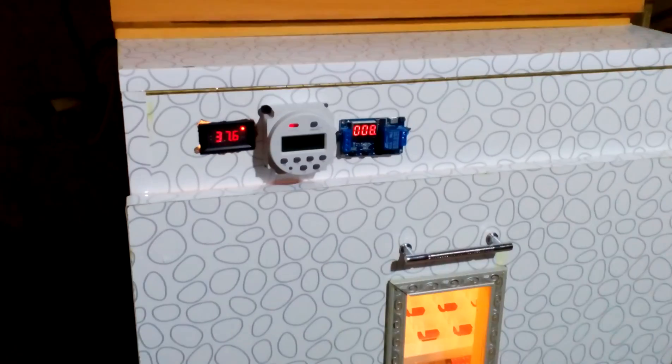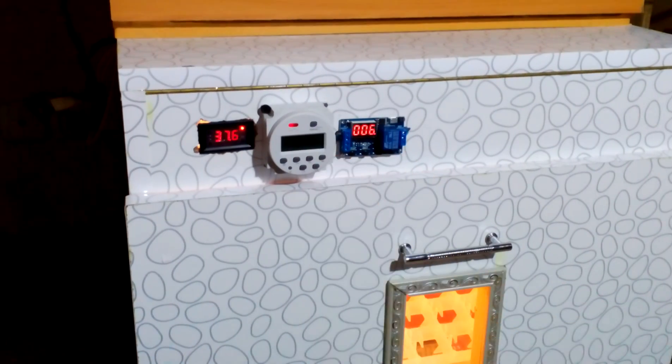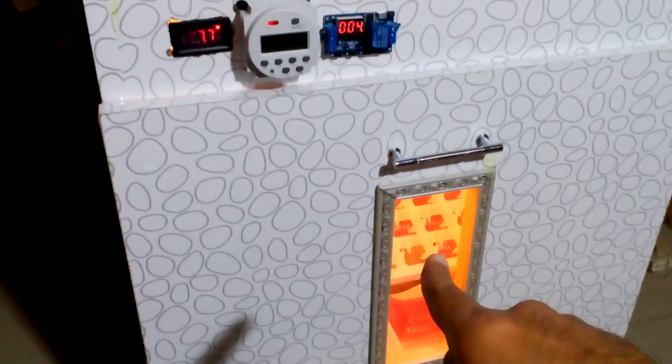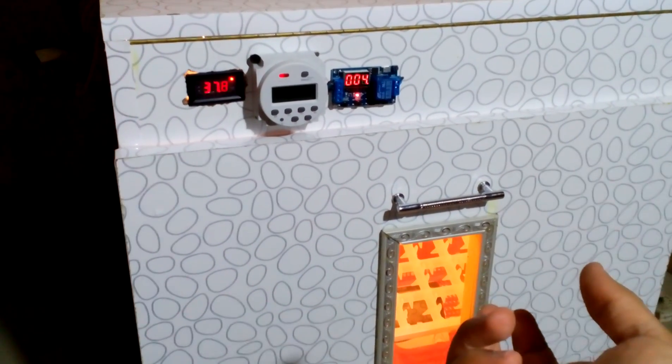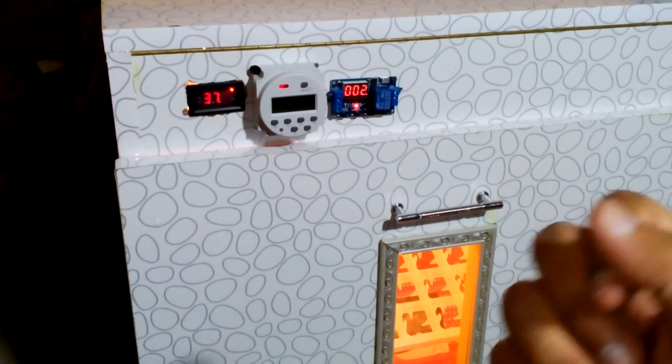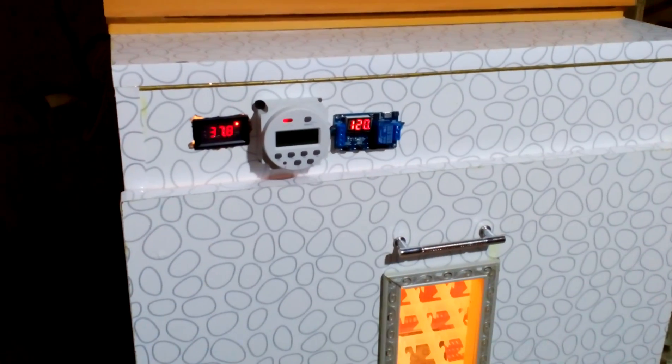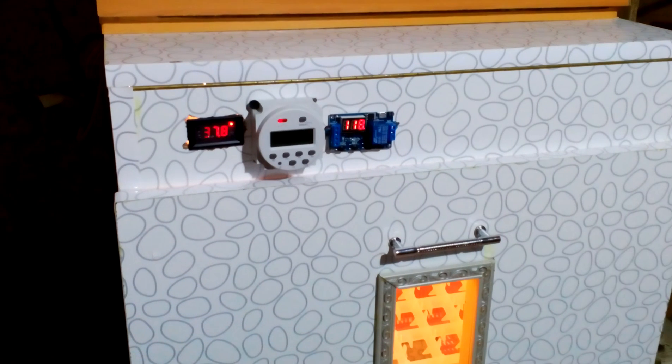And this is our timer for the egg turner. The egg turner is going up and down in a tilting position. It will turn on for one minute after every two hours, and we have set 37 to 38 degrees on this thermostat.